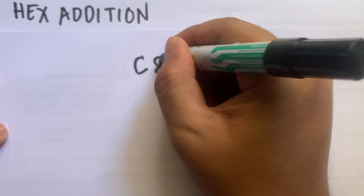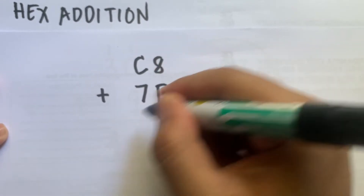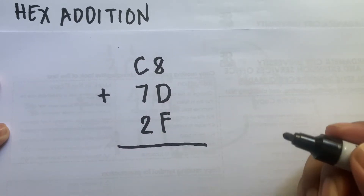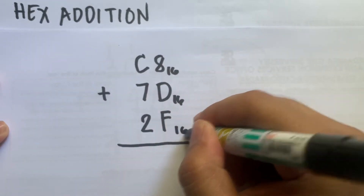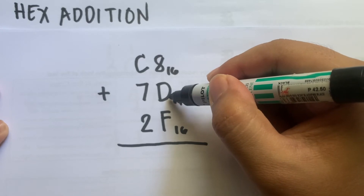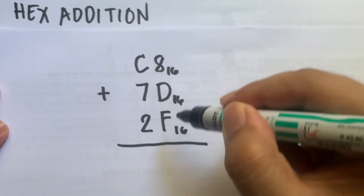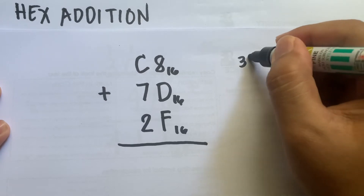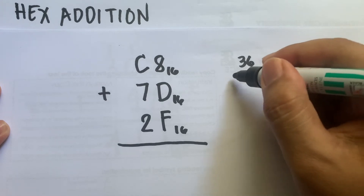Let's have another example. Say you have C8 plus 7, all in hexadecimal. Working through the digits: 8 plus D is 8 plus 13, which is 21; and F is 15, so 21 plus 15 is 36. Since 36 is an invalid hexadecimal number, we subtract 16.